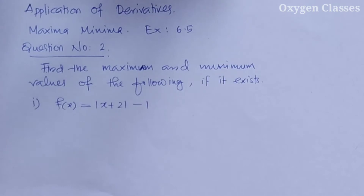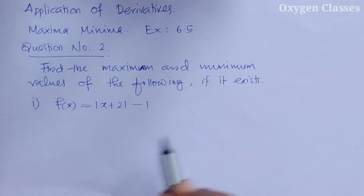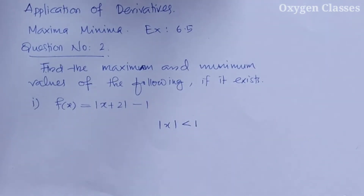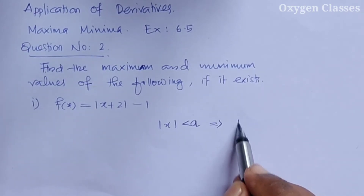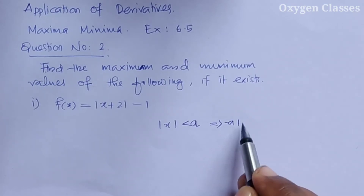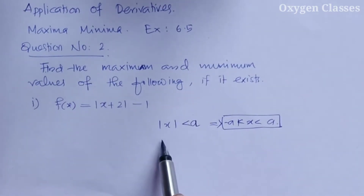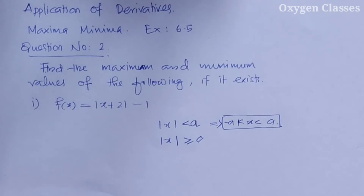If we apply the first derivative test and the second derivative test — this involves mod x plus 2. The key property is that all mod x values are greater than or equal to 0, because the modulus function gives absolute values, which are always positive or zero.